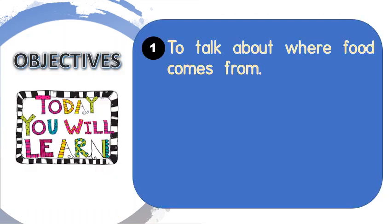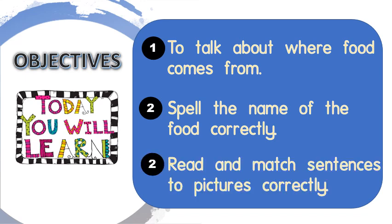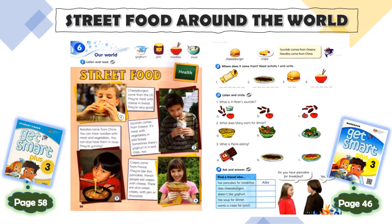For today's lesson, you will talk about where food comes from. You will also learn to spell the name of the food correctly. And finally, you will have to read and match sentences to pictures correctly. For today's lesson, you can refer to your student's book page 58.